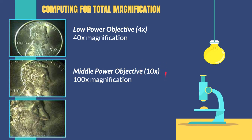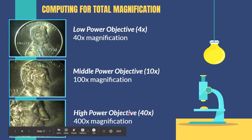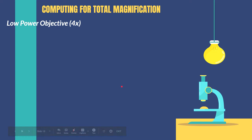The middle power objective will always have 10x magnification, meaning it magnifies the specimen 10 times its original size. The high power objective will always have 40x magnification — magnifying the specimen 40 times. So with a 10x ocular lens and a high power objective, you get 400x total magnification. To compute total magnification, you simply multiply the objective lens magnification by the ocular lens magnification.